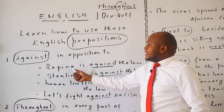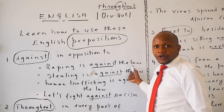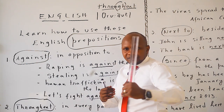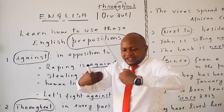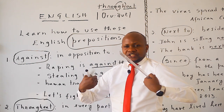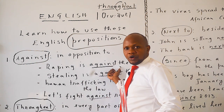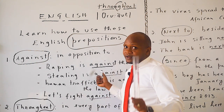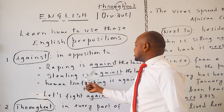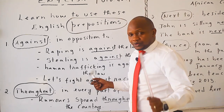For example, you can say: 'Raping is against the law.' Stealing is against the law. 'Against' means it is contrary to, it is prohibited by the law.